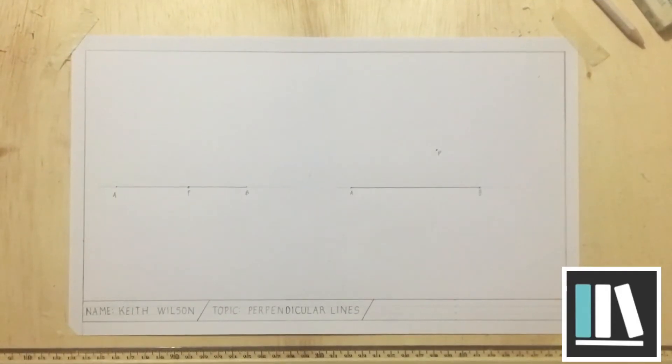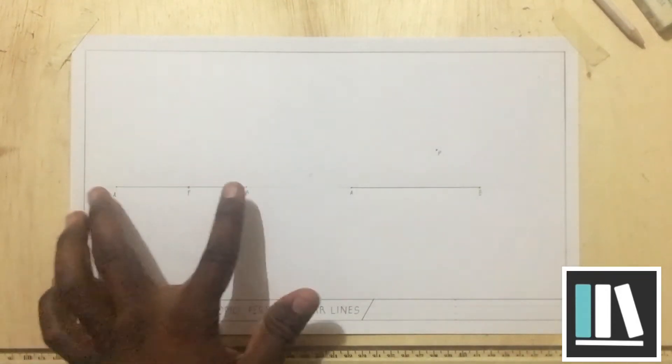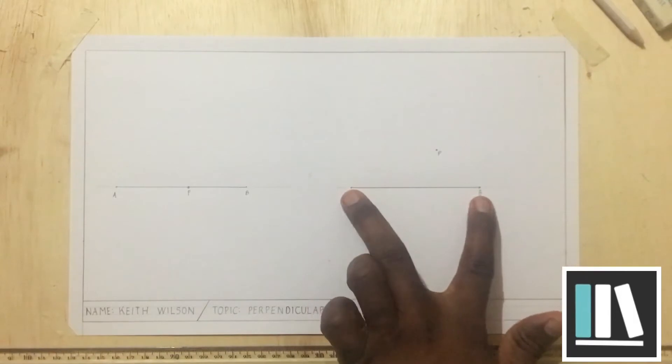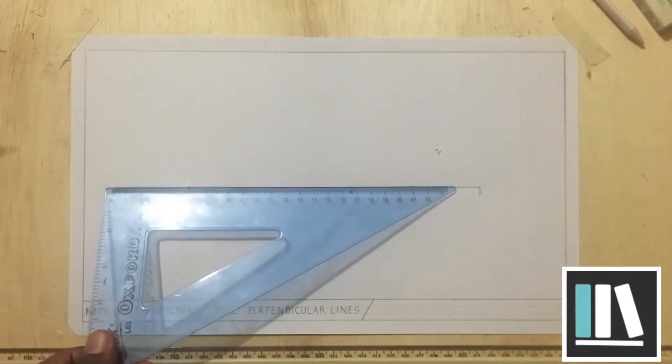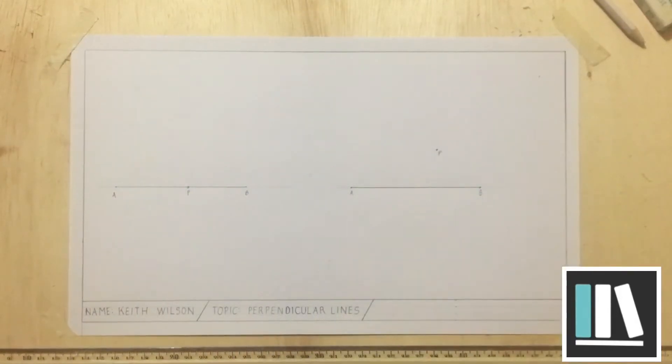So I have here two lines, line A, B, line A, B. Both are 90 millimeters in length.